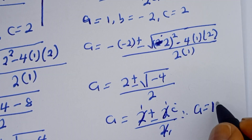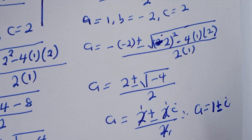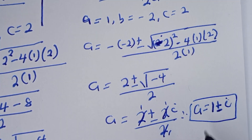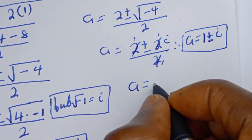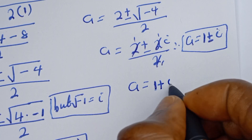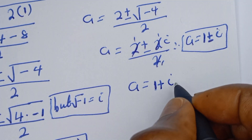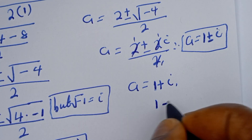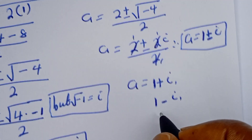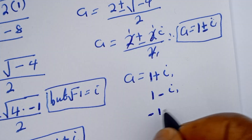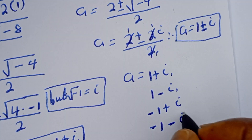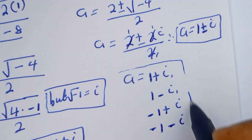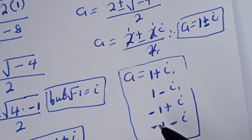Therefore, a is equal to 1 plus or minus i, from the second case. And our final answers are: a is equal to 1 plus i, 1 minus i, minus 1 plus i, and minus 1 minus i. The whole solution is a complex solution. I hope you enjoyed the video. Please don't forget to like, share, comment and subscribe to my channel. Thank you. Bye-bye.